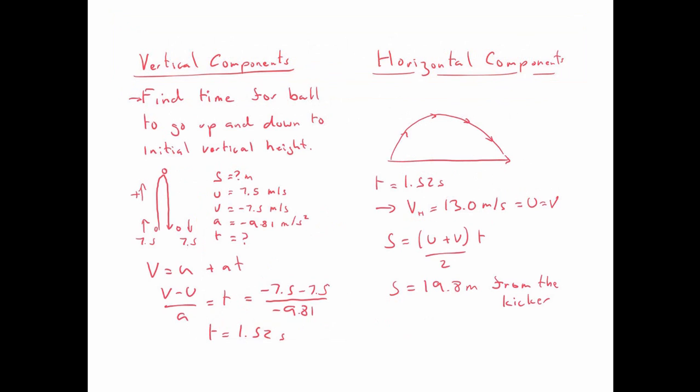So in the vertical components, we need to find the time for the ball to go up and down to the initial vertical height, which is zero. So the ball's going to go up and then back down to the same level. So the initial velocity going up was 7.5 meters per second. It reaches a maximum height and then comes back down. And when it's passing the same point, because air resistance is zero, the speed is also going to be 7.5. However, when the ball is dropping downwards, it's a velocity and the direction is going down. So it's actually going to be a negative.